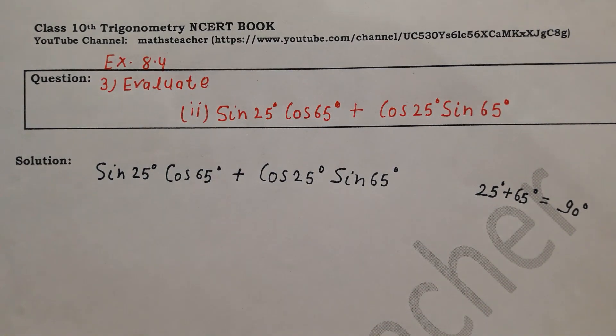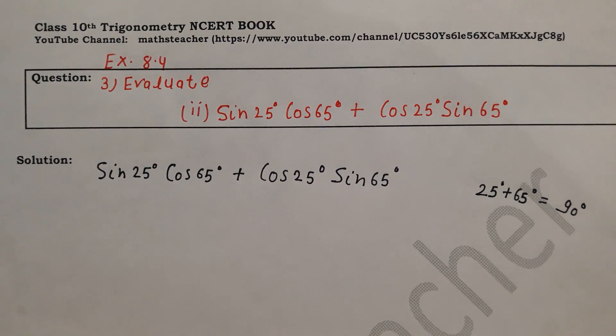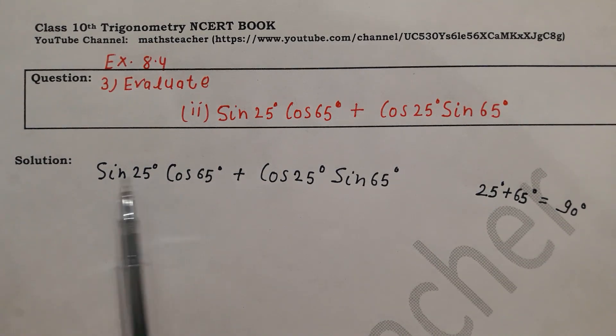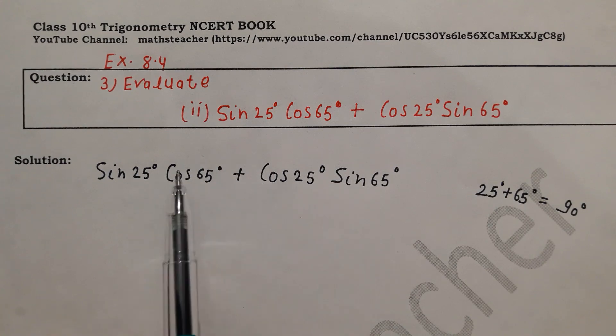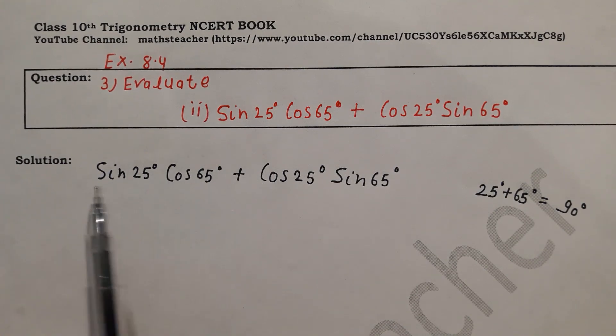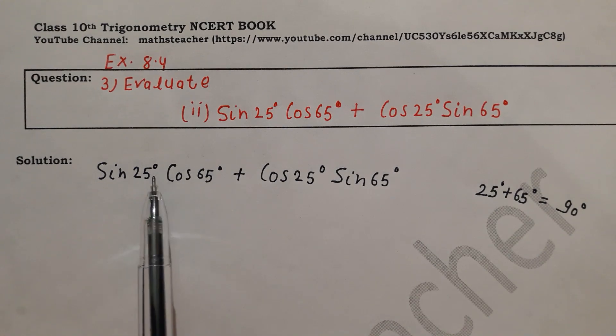So we will solve this question using complementary ratios. We have seen many formulas in this method. So here there is sin cos, cos sin. There is 2-2 pairing, so we have to change one. Either we change sin or cos, either we change one.